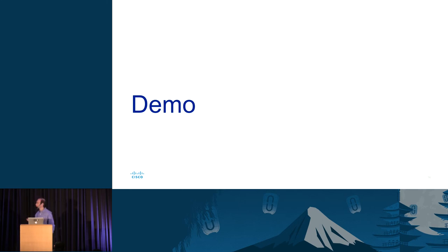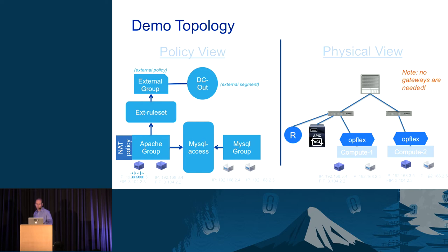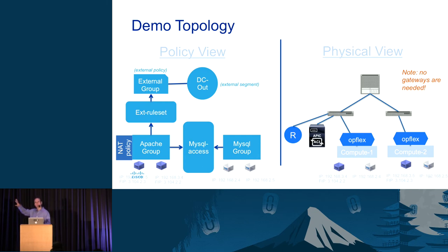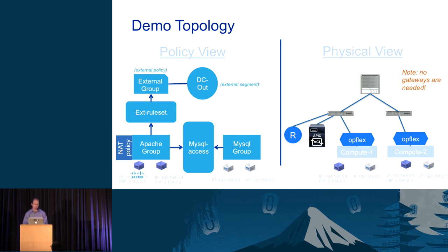With a few minutes remaining, I want to show you a quick demo of group-based policy in action. I'm showing you two views. One is a policy view of the policy I created through group-based policy — a very simple concept where I have a set of web servers, noted here as Apache, which have a NAT policy associated with them. Each of these VMs will automatically get a floating IP when they start up. Since I know this is going to be an externally visible group, group-based policy allows me to define a policy for applying floating IPs automatically. I also have a MySQL group, which represents the database in my scenario, and an external network configuration for my web servers to reach the outside world. On the right side, you'll see the ACI environment this is mapping to — a simple two-server scenario running OpFlex with APIC and an external router connected to it.